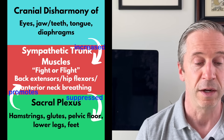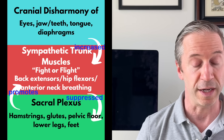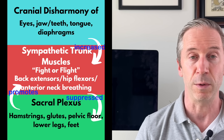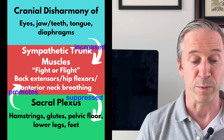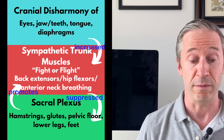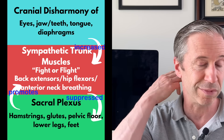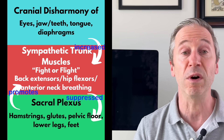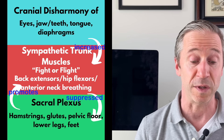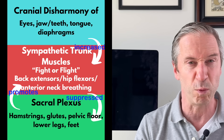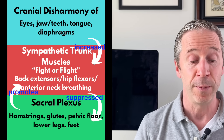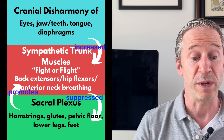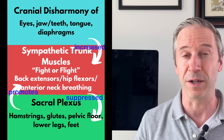Whenever you have cranial disharmony — the eyes, the jaw, the teeth, the tongue, and the diaphragms — that means you're not diaphragmatically breathing. That will increase your sympathetic trunk muscles, your fight-or-flight musculature: back extensors, hip flexors, and anterior neck. Your posterior neck — upper traps and SCMs — will probably ache. That suppresses normal activity in the sacral area: the hamstrings, the glutes, and the pelvic floor, which we need to stabilize the pelvis. But that drops off as the cranial disharmony remains longer, because you become more sympathetic, more fight-or-flight, and you get tighter and tighter.